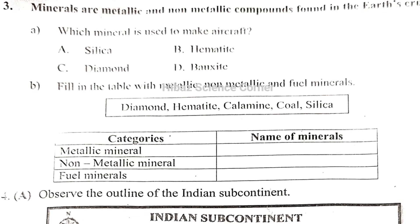Minerals are metallic and non-metallic components found in the earth's crust. Which of the following is a non-metallic mineral? Options include Hematite, Diamond, and Bauxite. Bauxite is associated with aluminium, and Hematite is associated with iron. The answer is D, Bauxite.